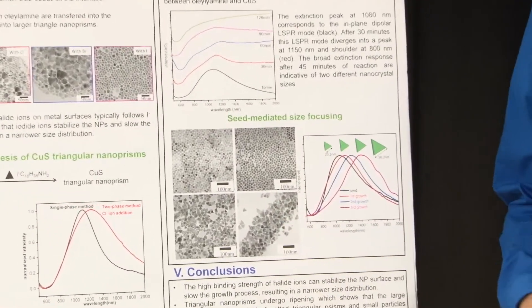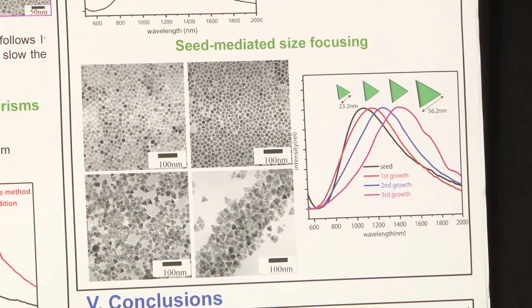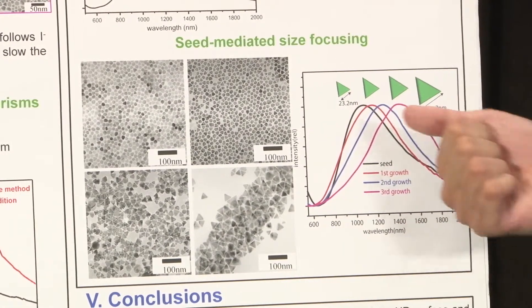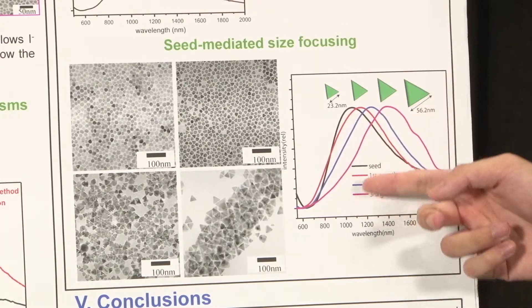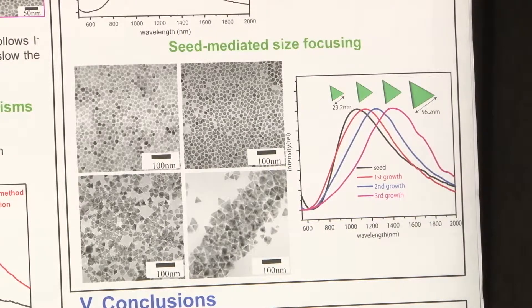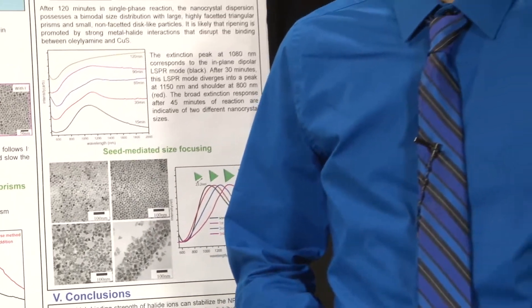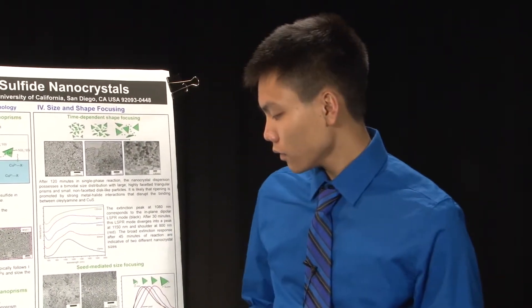This is yielding better results. Here you can see an IR spectra of these particles. As you can see, the shape plays a big role in the sharpness of the LSPR peaks. My conclusions for this summer are that halide ions play a big role in the shape of nanoparticles being made, and that triangular nanoprisms undergo a ripening effect, which can help control the size of nanoparticles of any shape.